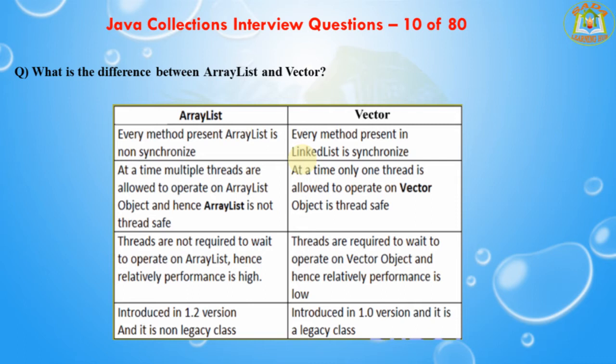At the time of multiple threads operating on ArrayList, it is not thread-safe. Only one thread is allowed to operate on a Vector object, so it is thread-safe. Threads are not required to wait to operate on ArrayList, hence performance is relatively high. Threads are required to wait to operate on Vector, hence performance is relatively low. ArrayList was introduced in version 1.2 and is a non-legacy class; Vector was introduced in version 1.0 and is a legacy collection.